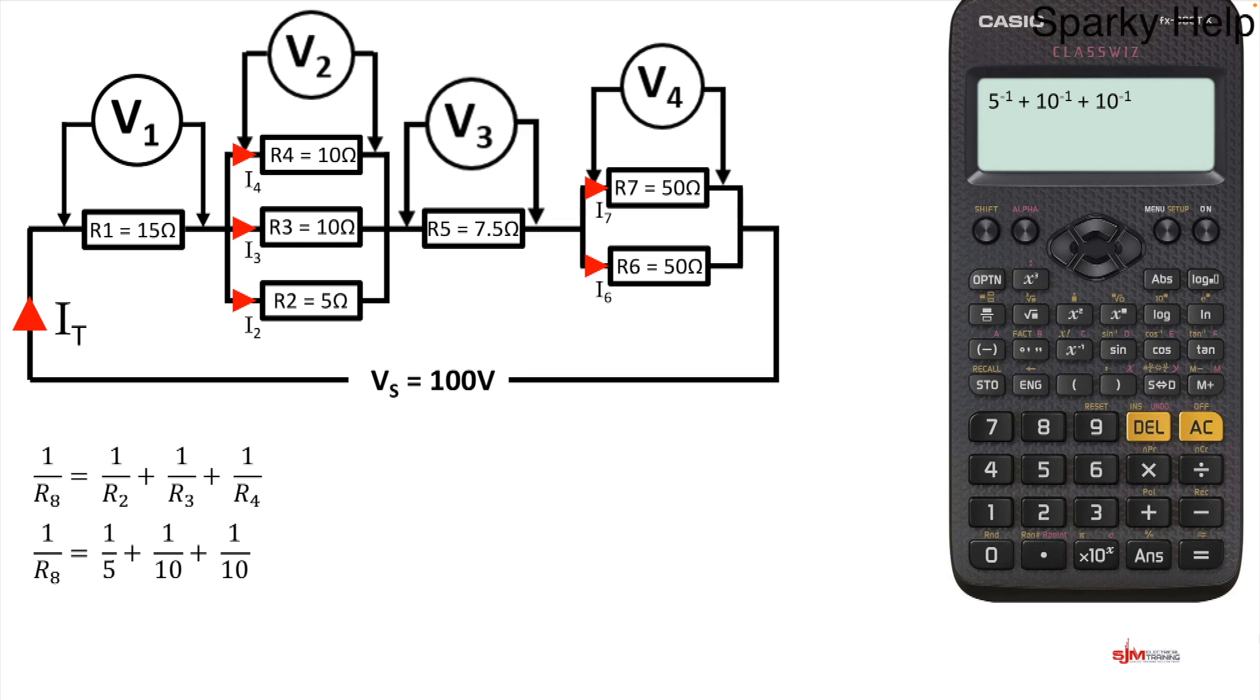We're going to put in our five, press X to the minus one, press plus, put 10 in, X to the minus one, plus 10, X to the minus one and then press equals. But we're not finished yet. Don't stop there because you'll end up with a fraction or a decimal. What we need to do is press the X to the minus one once more and then press equals to get your answer. And when we do that we get an answer of 2.5.